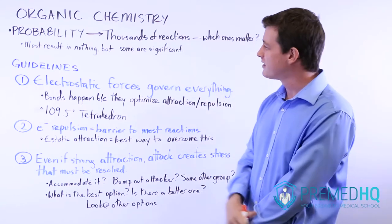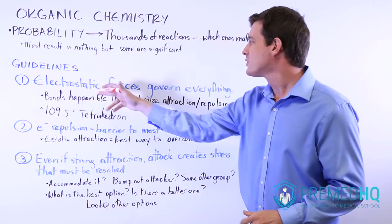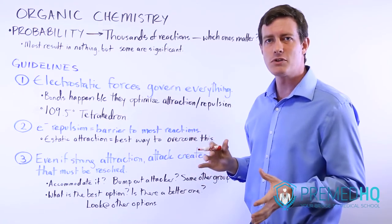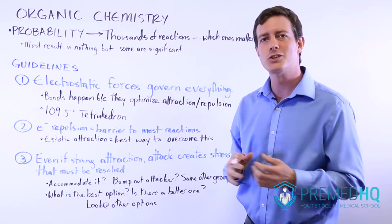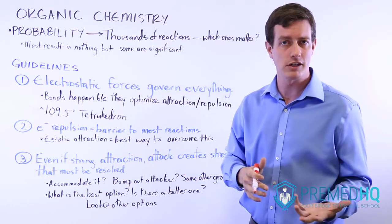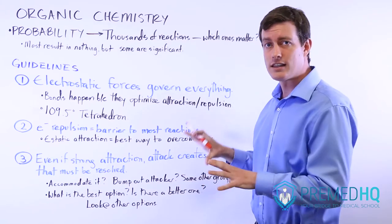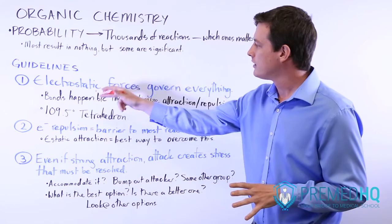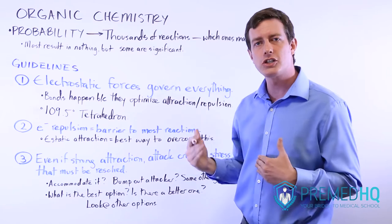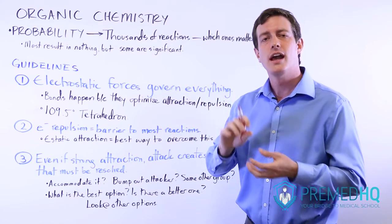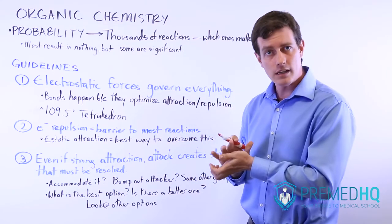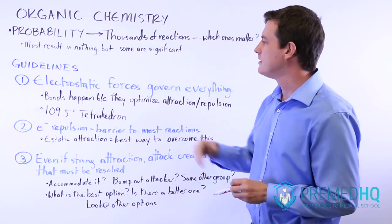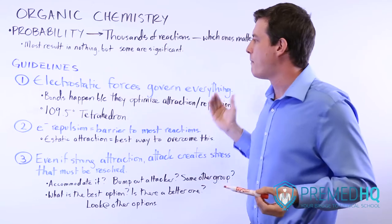The first thing to look at is that electrostatic forces govern everything. Everything that happens in organic chemistry, even if it's explained in terms of functional groups, leaving groups, and resonance, all happens because of electrostatic forces: attractions between positive and negative charges, and repulsions between two negative or two positive charges.